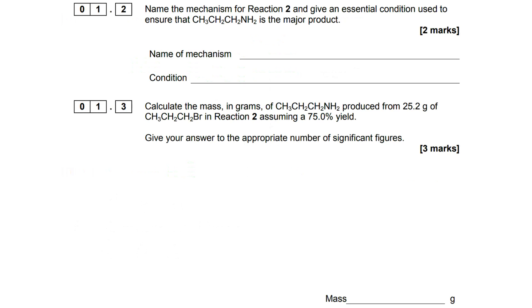When we take a look at 1.2, the mechanism for reaction 2 and an essential condition used to ensure that it's the major product. Not an uncommon question, so we need to be prepped for it. I want to try to encourage people to understand mechanism names and not try to learn them, because you have so many of them it's easy to get mixed up.